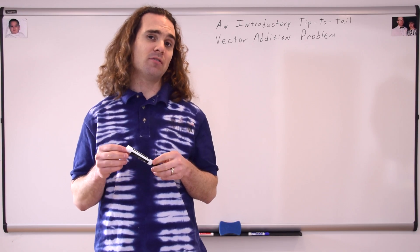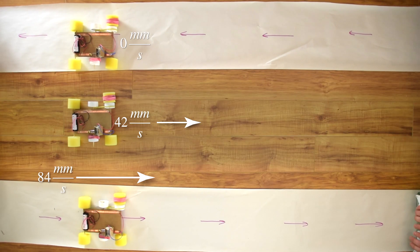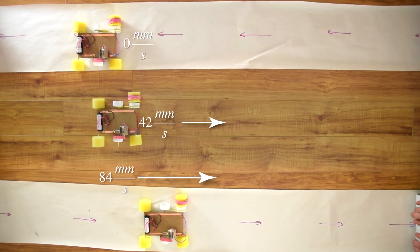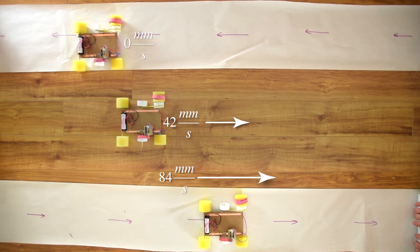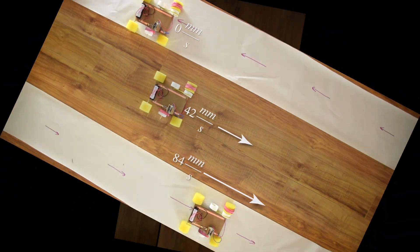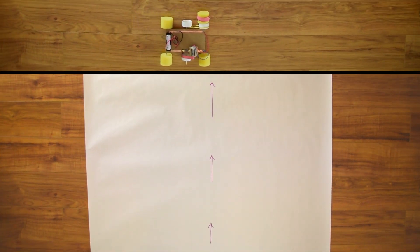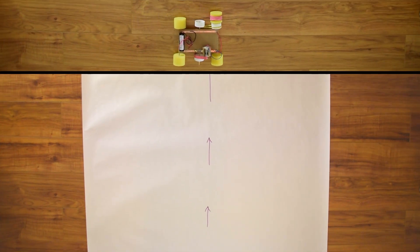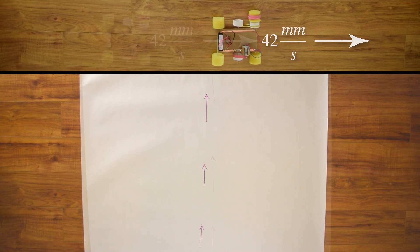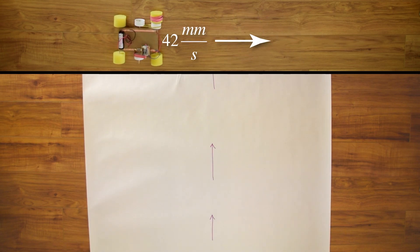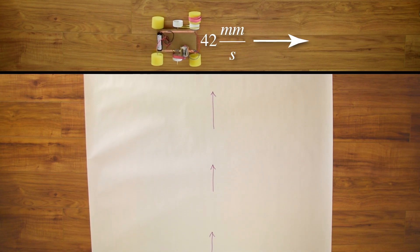Last time we had slow velocity racer racing parallel to the moving track. To make things a little more interesting, we are going to turn the track 90 degrees and increase the width of the moving track. As we figured out last time, slow velocity racer can race at 42 millimeters per second, and we are going to have her racing east.